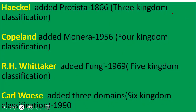When we look back at the classification systems, there are various scientists who made contributions. We cannot forget the name of Haeckel, who in 1866 added Kingdom Protista, making it a three kingdom classification system. Then Copeland, almost after one century, added Monera to the group, and Whittaker added Fungi. In the year 1969, he gave the five kingdom classification system.